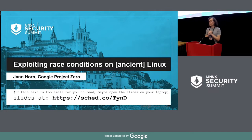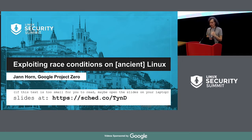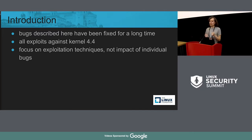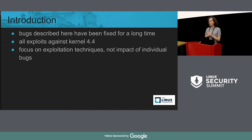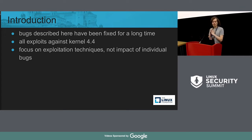I'm Jan Horn from Google Project Zero. I'm here today to talk about some tricks that can be used to exploit race conditions in the Linux kernel. All of the bugs that I'm talking about here have been fixed for a long time — one of the bugs is from 2016, two others are from last year, and all of the exploits are against kernel 4.4, which in Android land is still relevant for certain devices. But the focus here is on exploitation techniques, not on the individual bugs.